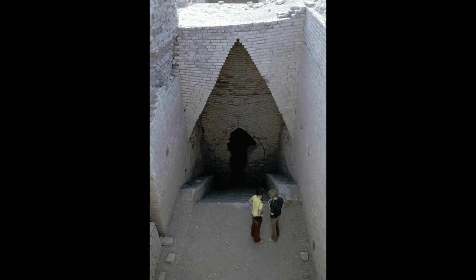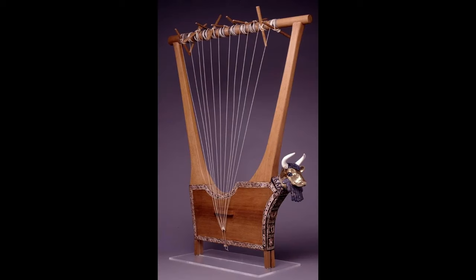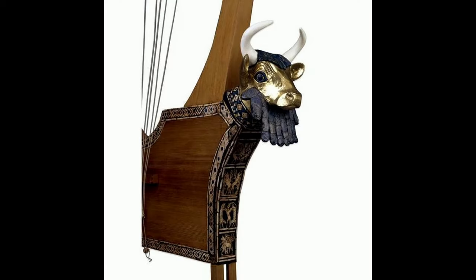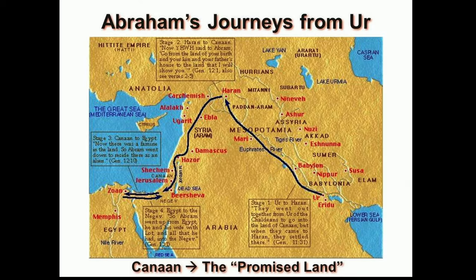Royal tombs were also unearthed at Ur, containing many artefacts such as musicians' decorative harps with bulls' heads. The harp or lyre is first mentioned in Genesis 4 verse 21, eight generations after Adam. But some critics used to argue it was absolutely impossible, maintaining that such musical instruments were not invented till around 1000 BC. However, the harps found at Ur dated back long before that, confirming the biblical account.